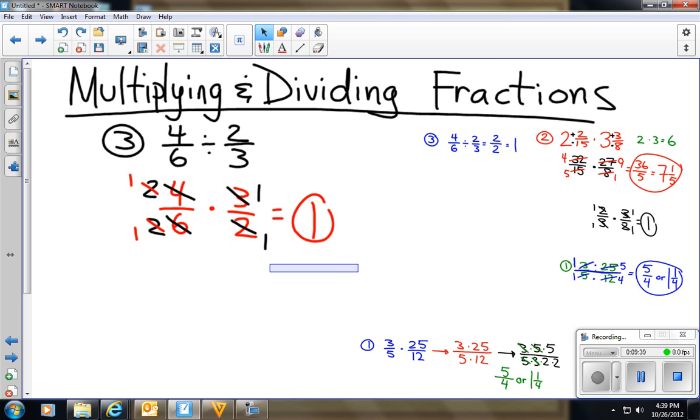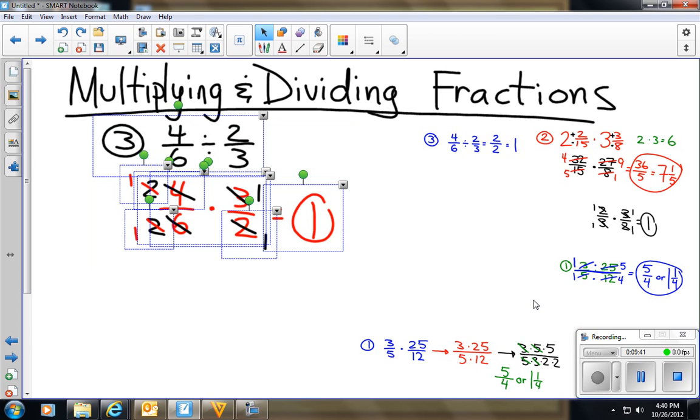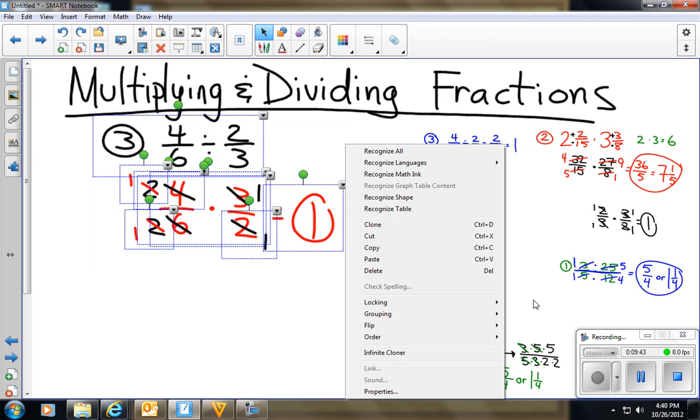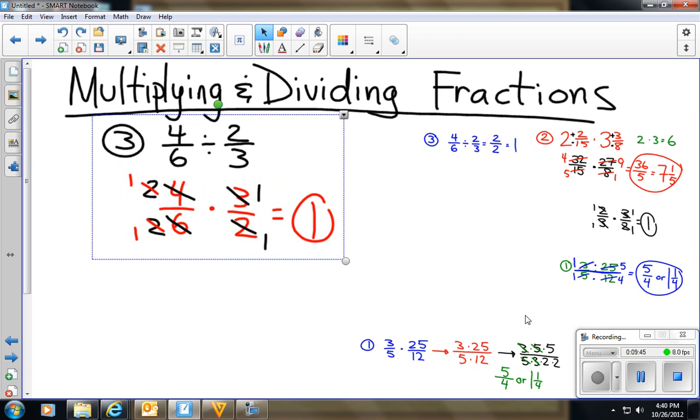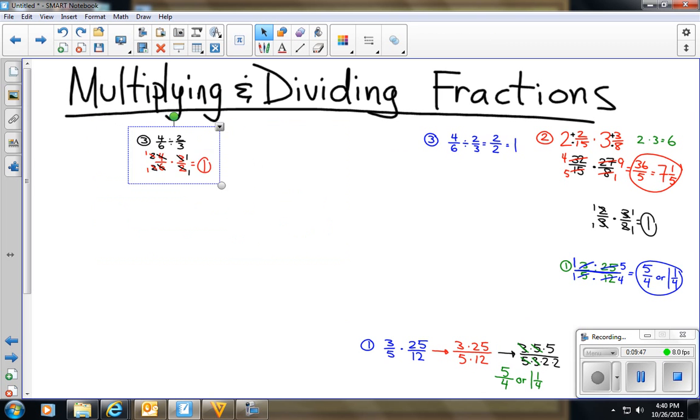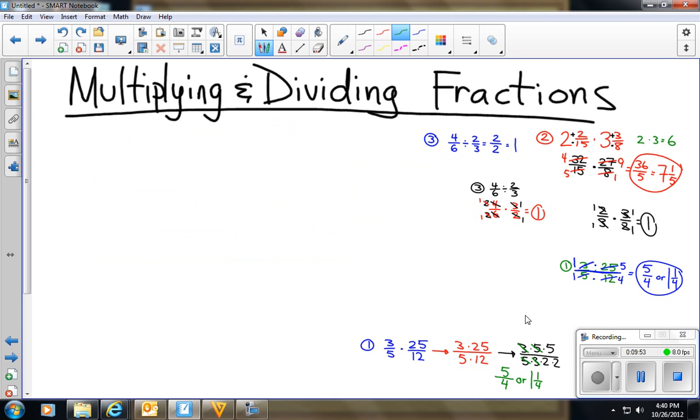So you might be thinking to yourself, well, the other way, when I just divide across, it's so much easier. Why don't I always do it that way? Wouldn't it make complete sense just to do it that way every time? Well, it would be perfect in a perfect world, but as we know, we don't live in a perfect world.